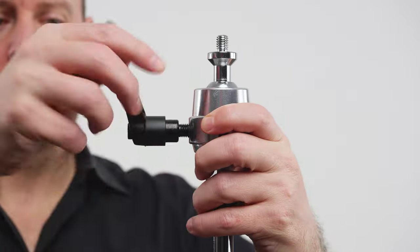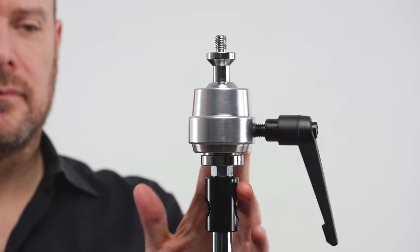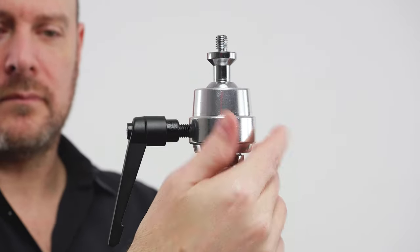By loosening the ratcheting handle securing the ball joint, the base also easily rotates 360 degrees for further positioning flexibility.